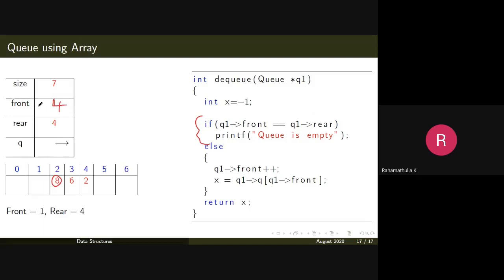If front equals minus one and rear equals minus one, or if front equals rear in any state, the queue is empty. Otherwise, increment front — front goes from one to two — then x equals q[front], giving you the value eight. Return that value.